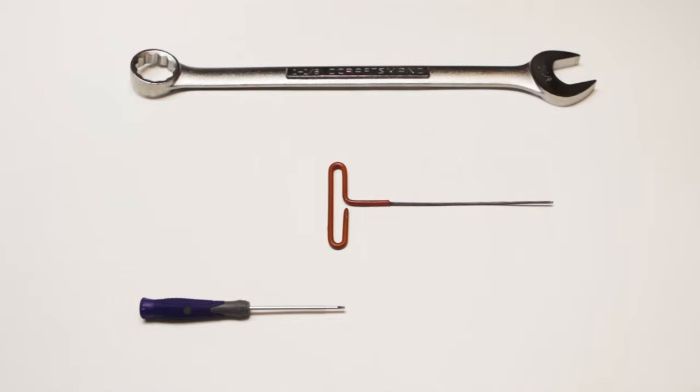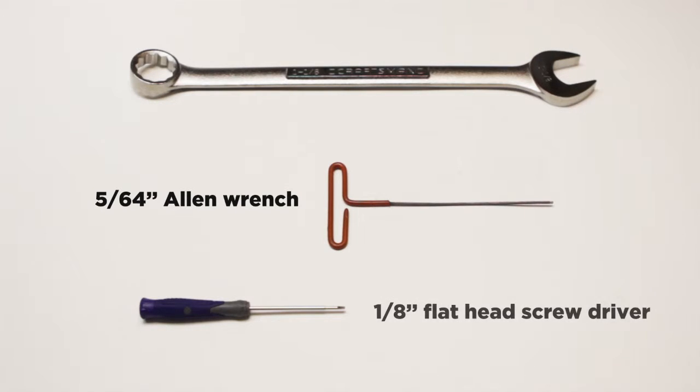The tools you'll need are a 5/64 inch Allen wrench to set the limit switches, a 1/8 inch flathead screwdriver to make electrical connections, and a 1-1/8 inch open end wrench to adjust the spring end torque and mechanical stop.